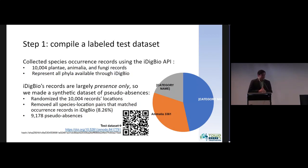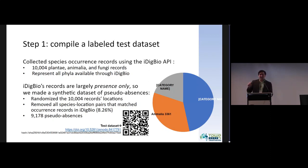There's a problem, though: iDigBio's records are largely presence-only — they only describe where species are, but not where they are not. We needed species absences in order to say whether ChatGPT is actually right, or if it's just saying yes all the time. So we made a synthetic dataset of pseudo-absences by taking all 10,000 records and randomizing their locations, assuming that a random location has a decent chance the species doesn't actually exist there. We then removed any species-location pairs that were found in iDigBio, which was only about 8%, ending up with about 9,000 pseudo-absences.